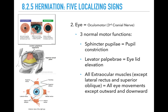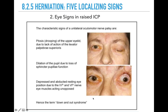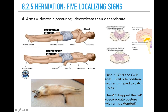The oculomotor nerve controls the sphincter pupillae, levator palpebrae, and most extraocular muscles. Paralysis of the third nerve gives you ptosis, dilation of the pupil, and down-and-out syndrome. Compression of the midbrain gives decorticate flexion of the arms, and compression of the pons gives decerebrate posturing. A useful mnemonic: first you caught the cat with arms flexed (decorticate), then you dropped the cat (decerebrate). So decorticate comes before decerebrate.